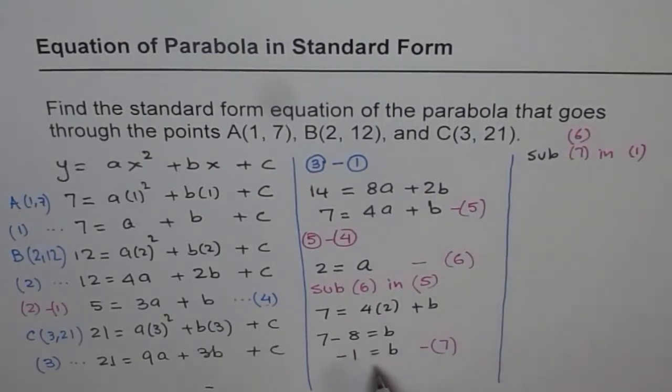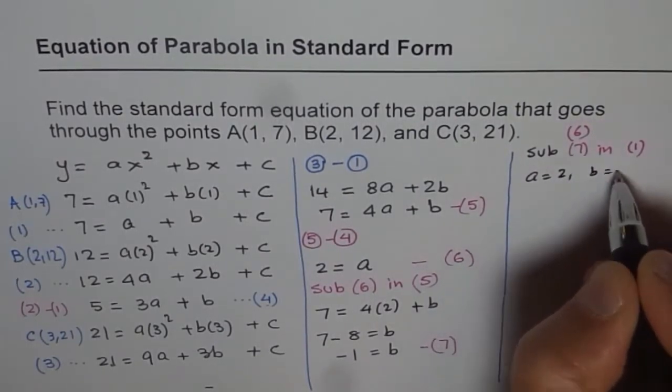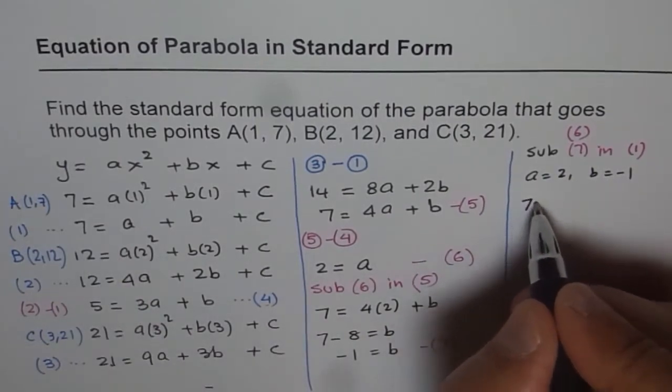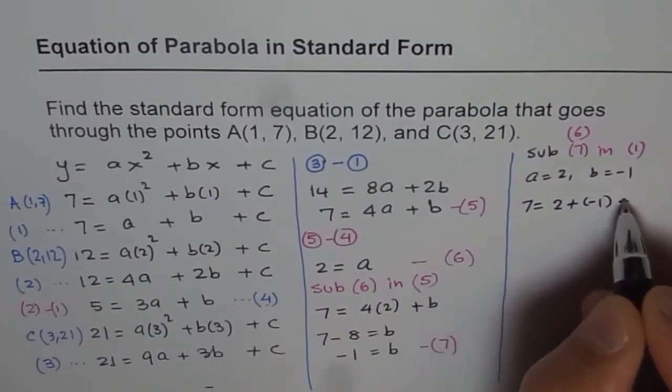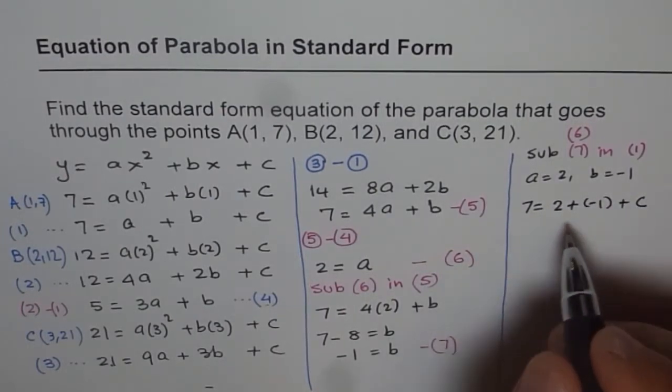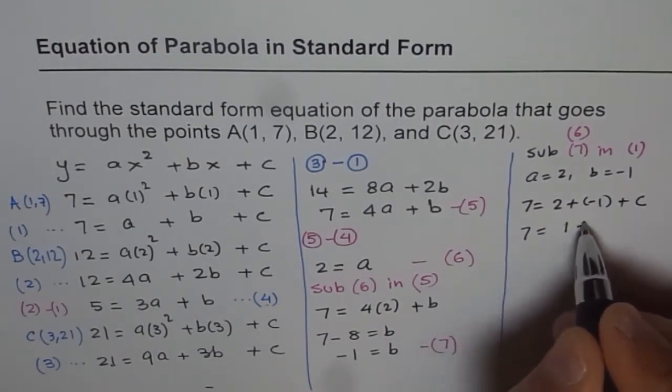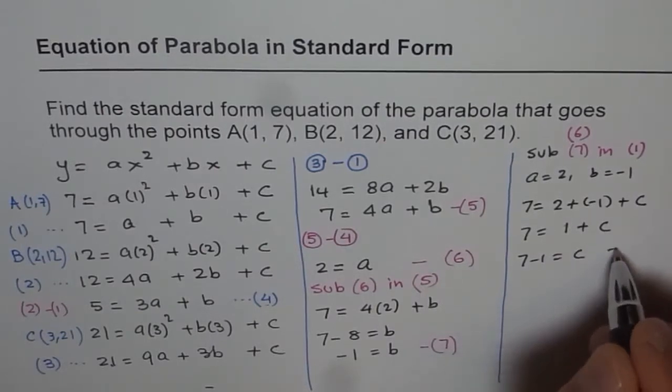So a we know equals 2, b equals minus 1, and we are substituting these in equation number 1. So we have 7 equals 2 plus minus 1 plus c. So that is 7 equals 2 minus 1 is 1 plus c. And we get 7 minus 1 equals c, which is equals 6.